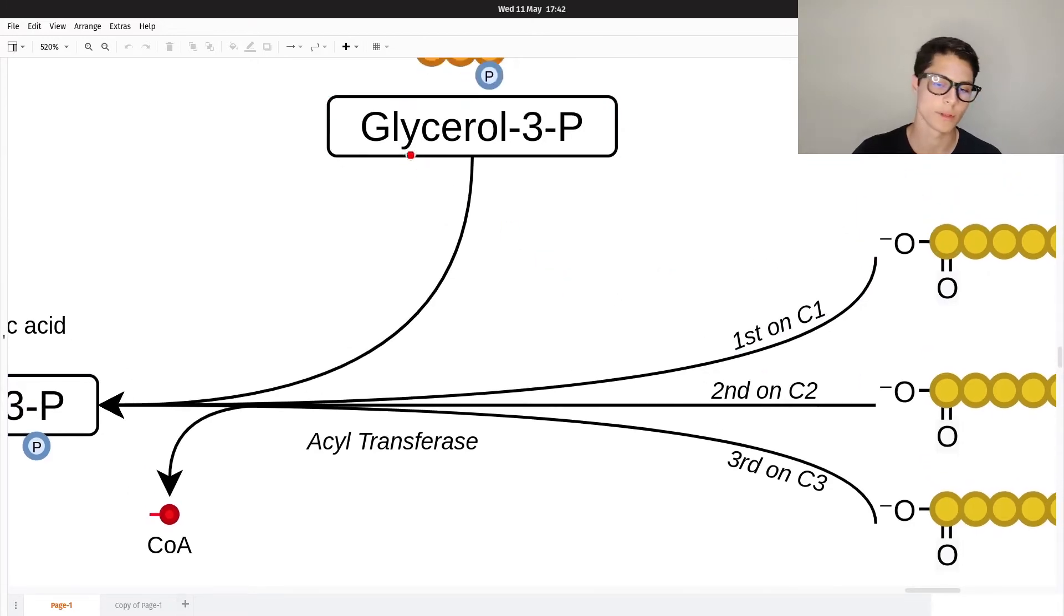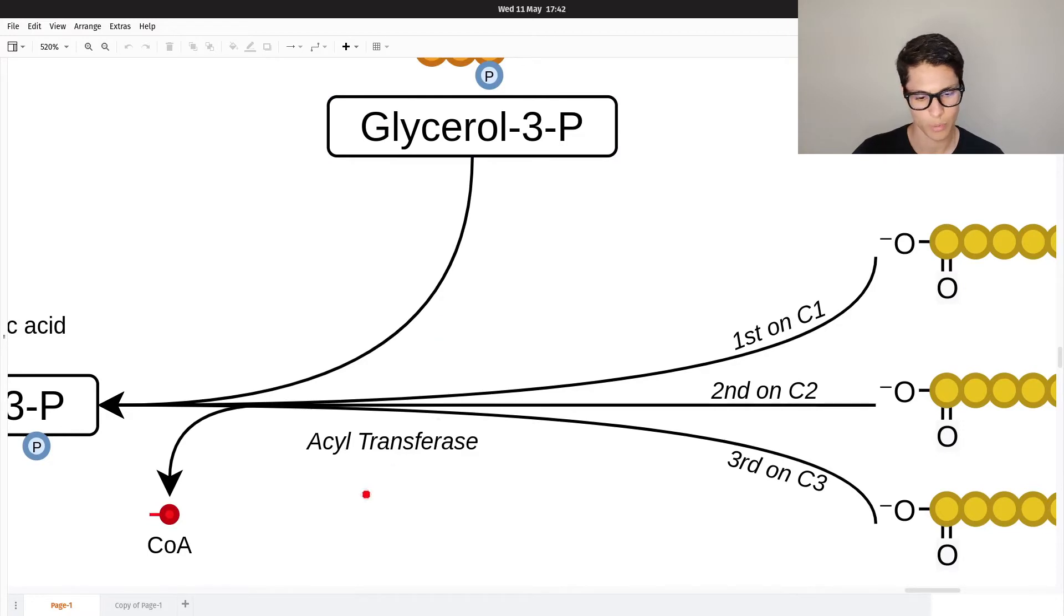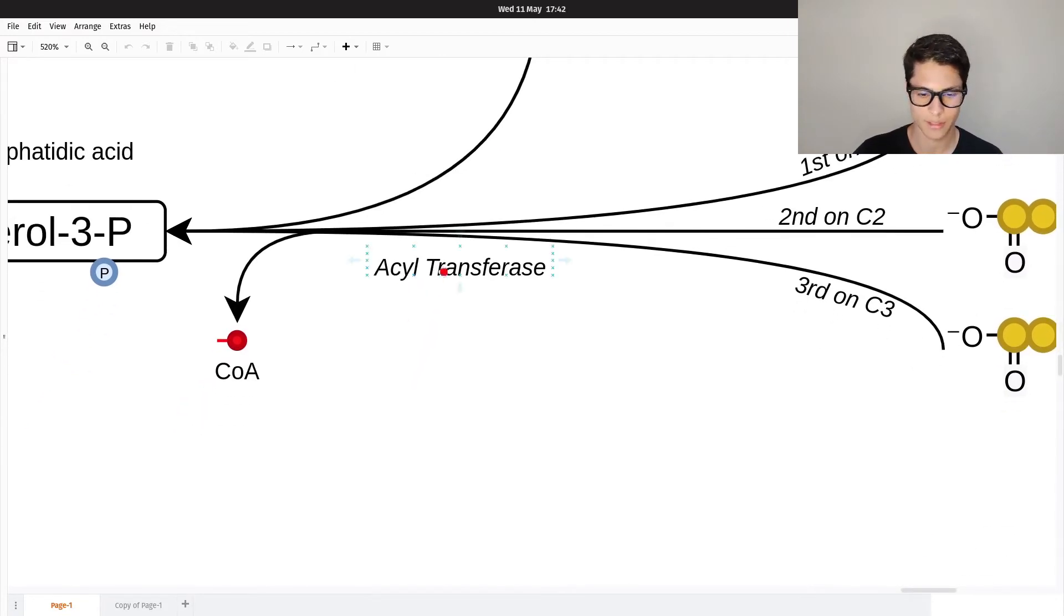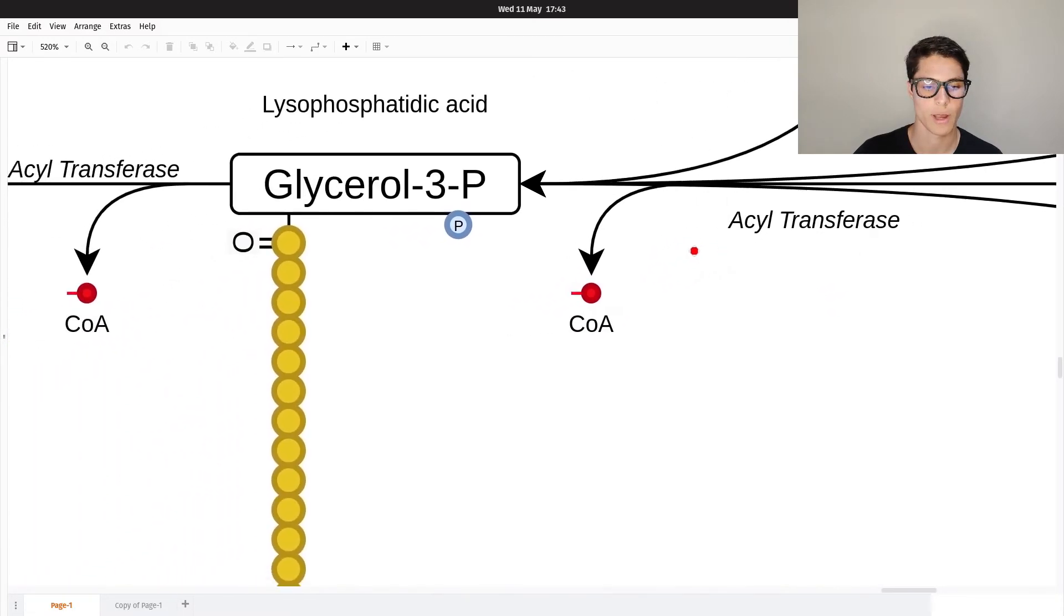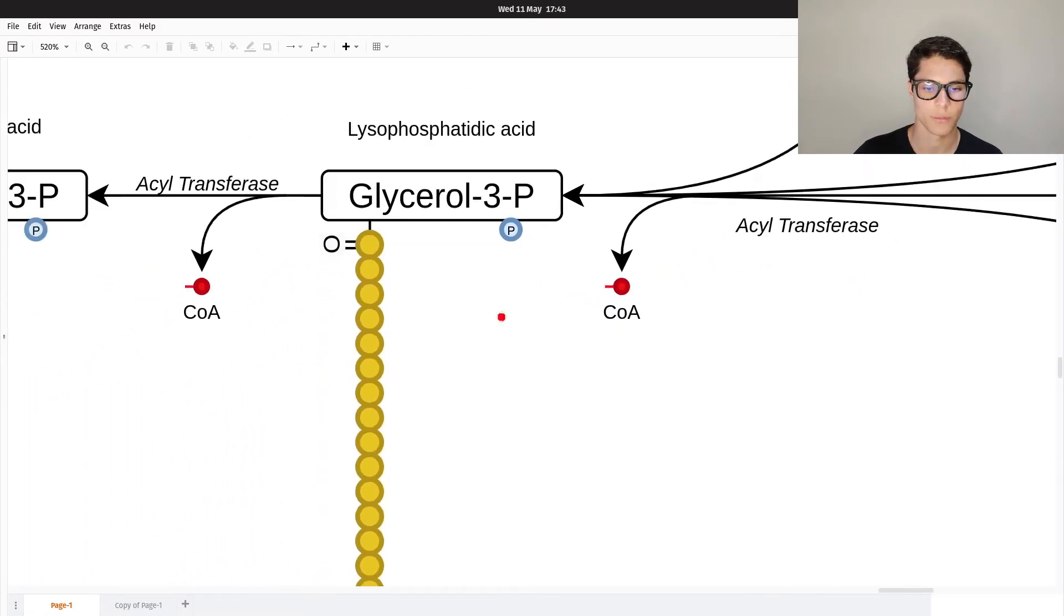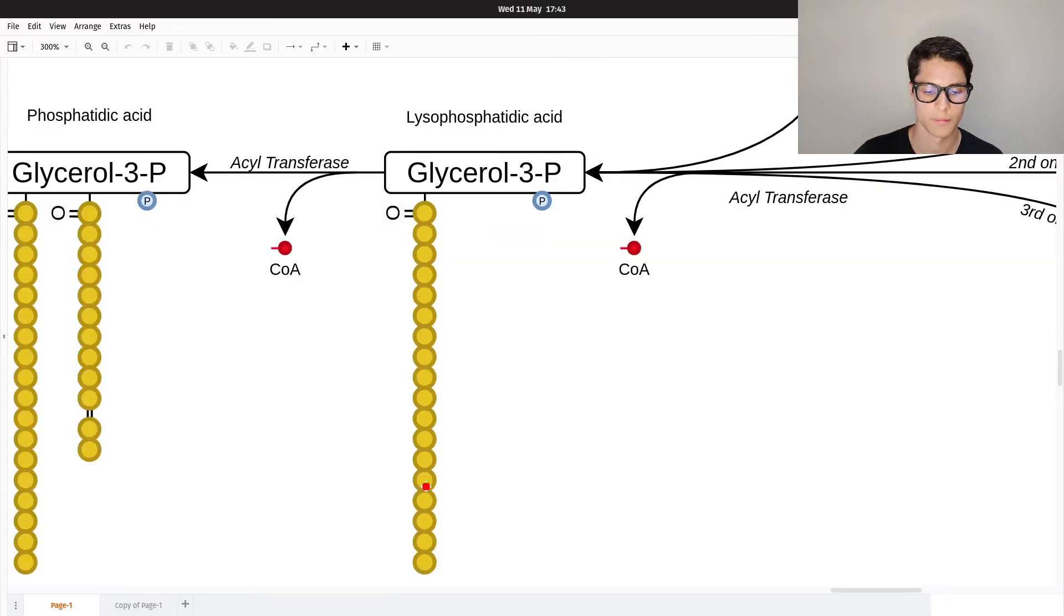We use an acyl transferase and we get rid of the CoA in the process, so we create lysophosphatidic acid. The free fatty acid gets bound to the glycerol-3-phosphate at carbon one.